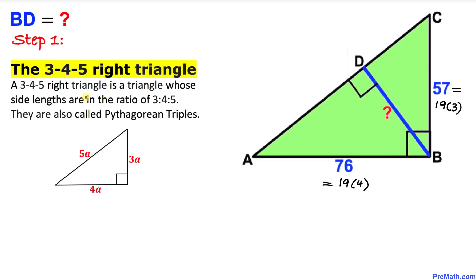A 3-4-5 right triangle is a triangle whose side lengths are in the ratio of 3, 4, and 5. Here we have 19 times 3 and 19 times 4, so according to this theorem, we are going to have the hypotenuse equal to 19 times 5.